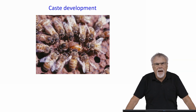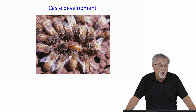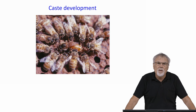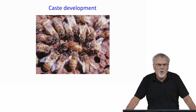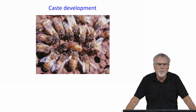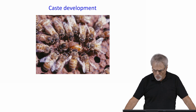This module is about caste development. Workers and queens develop from basically the same eggs — there is no genetic difference in the eggs that are laid. A worker-destined egg can be raised in a queen cell and a queen will emerge. The difference is based upon nutrition, which determines which phenotype emerges — whether it is a queen or a worker.